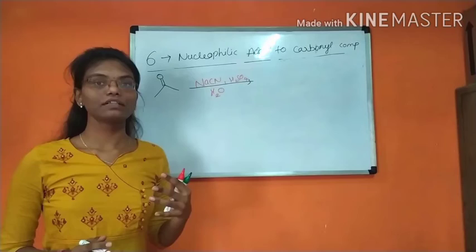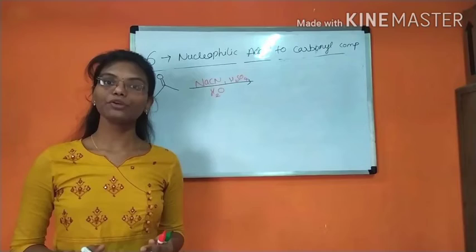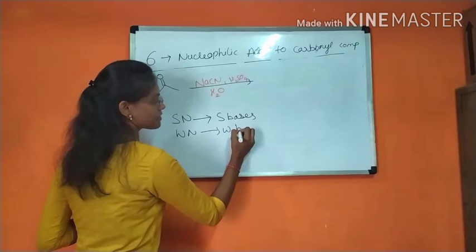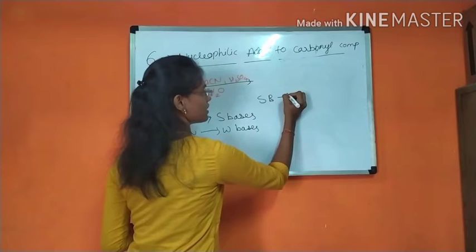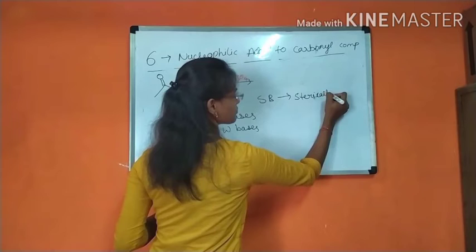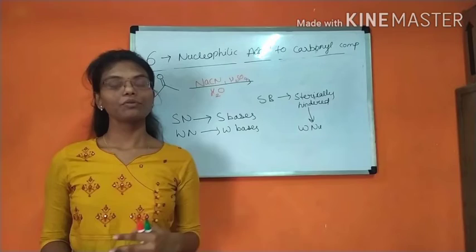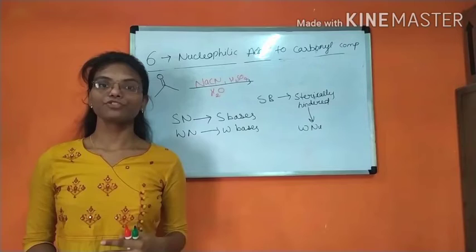There are some nucleophiles which cannot activate the carbonyl carbon — those are weak nucleophiles. To differentiate between strong and weak nucleophiles: strong nucleophiles are strong bases, whereas weak nucleophiles are weak bases. If the strong base is sterically hindered, then this strong base acts as a weak nucleophile. To know which is a strong base and which is a weak base, follow the events table available in the description box.